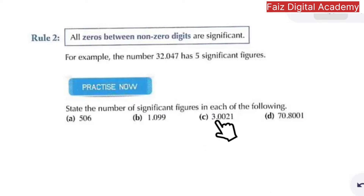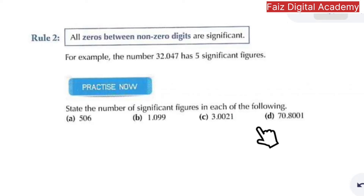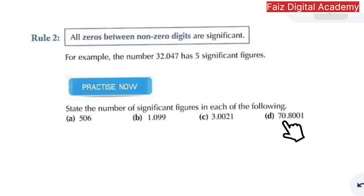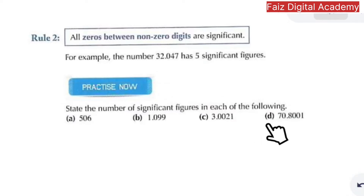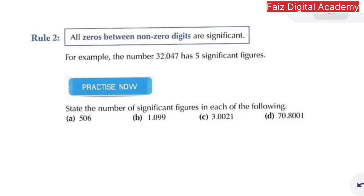3.0021 has five significant figures, and 70.8001 has six significant figures. In all these cases, all the numbers are significant because the zero is coming in between non-zero digits. This was rule number two.